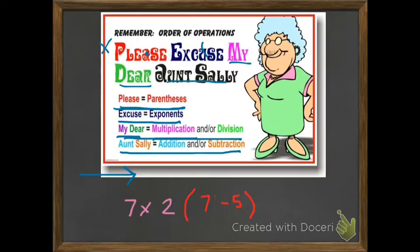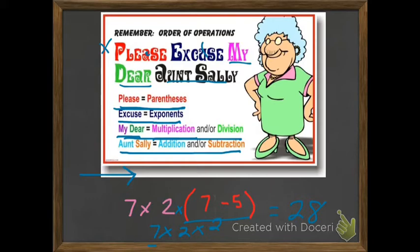To solve this problem, we have to do what's in the parentheses first. So 7 minus 5 is 2. When we have a problem in parentheses right next to a number, that means multiplication. So now we have 7 times 2 times 2. We start from left to right: 7 times 2 is 14, and 14 times 2 equals 28. I did what's in the parentheses first, then I went from left to right.